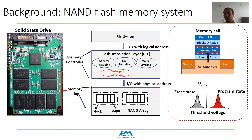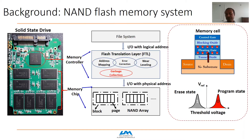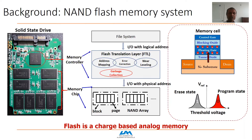Flash is a floating-gate transistor that stores information as charge on the floating gate. If there is charge, the cell is programmed and has a higher threshold voltage, represented as logic zero. If there is no charge, it has a lower threshold voltage, representing logic one. This is essentially analog memory, and we obtain digital information by applying a read reference voltage between the two threshold voltage distributions — which has huge implications for the data recovery process.